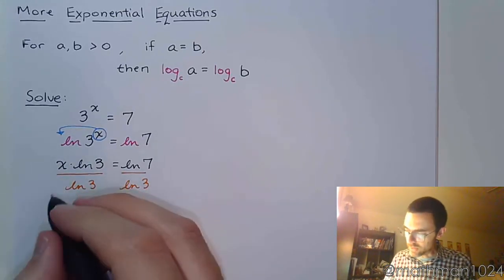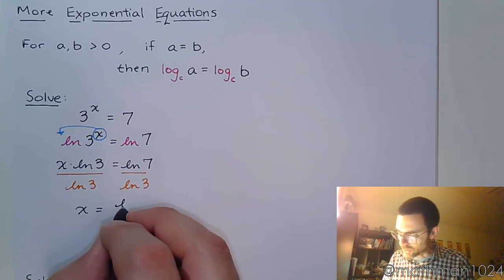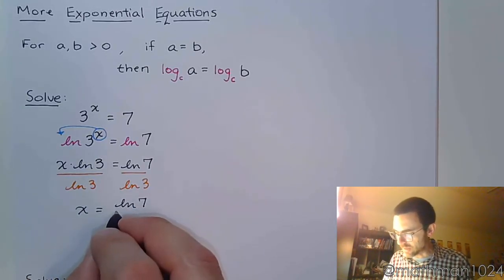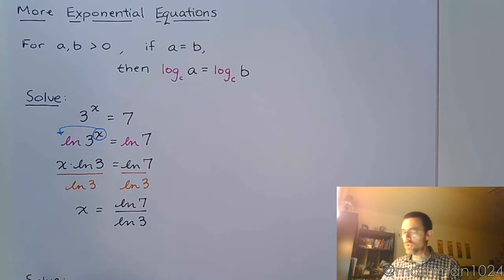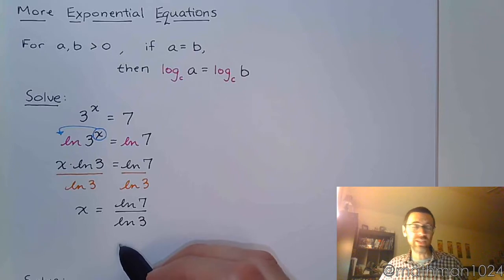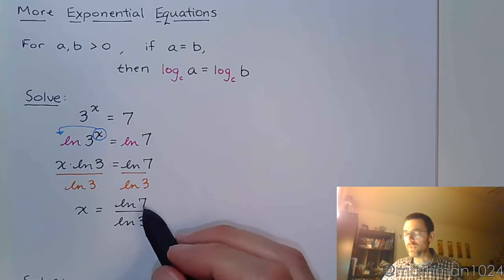So here at the end, x is equal to the natural log of 7 over the natural log of 3. Now be careful. Do not try to cross out natural log because it's not a factor. You've got to keep it like this.